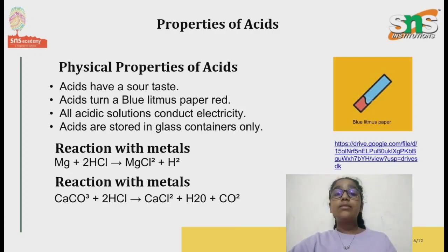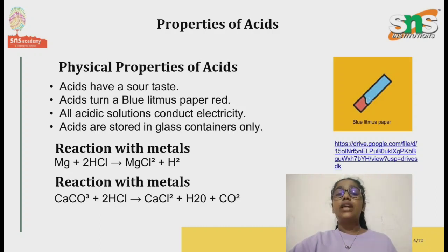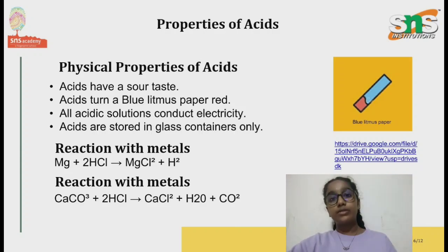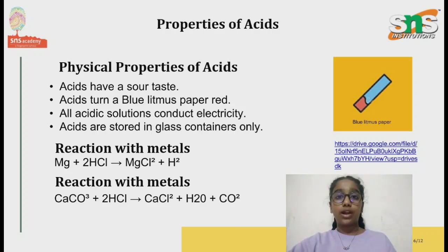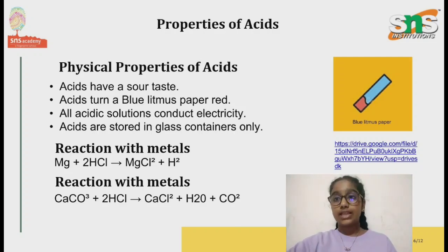Now let's see some chemical properties of acids. First, the reaction with metals. All acids consist of hydrogen atoms. Dilute acid reacts with metals to form hydrogen gas and salt — the metals replace the hydrogen of acids to form salt. For example, magnesium plus hydrochloric acid gives magnesium chloride plus hydrogen. However, less reactive metals like copper, gold and silver cannot replace the hydrogen from the acid.